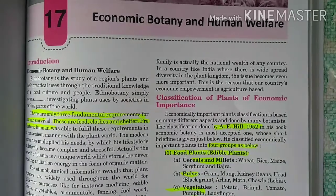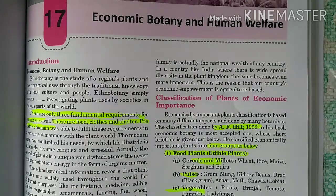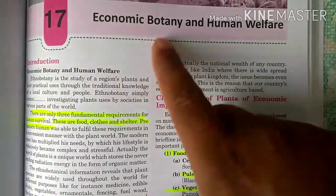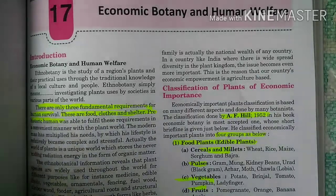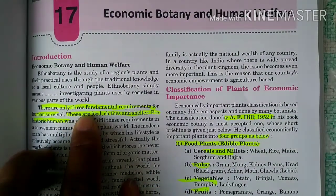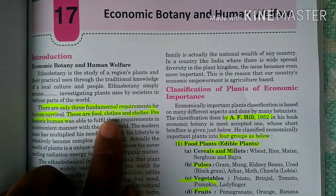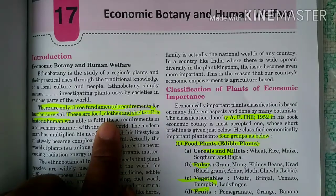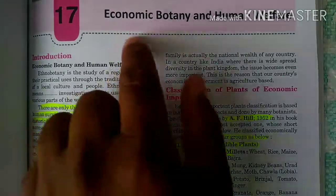Good morning students. Today we discuss lesson number 17, class 12 of biology RBSE. In this lesson we cover economic botany and economic plants. The three fundamental requirements of humans are food, cloth, and shelter.